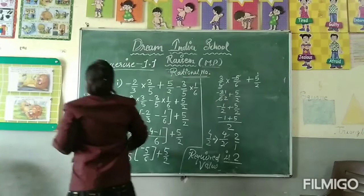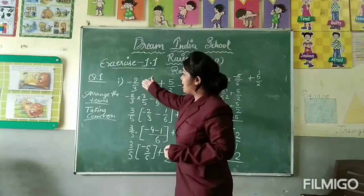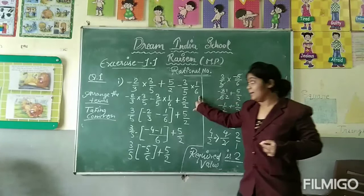Rational number. First question is how we use some properties. The question is minus 2 upon 3 into 3 upon 5 plus 5 upon 2 minus 3 upon 5 into 1 upon 6. Let's see, it's very easy.